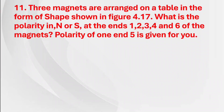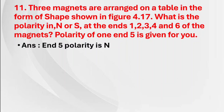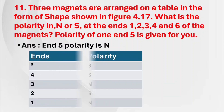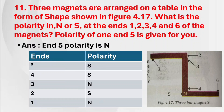Eleventh question: Three magnets are arranged on a table in the form of the shape shown in figure 4.17. What is the polarity (N or S) at ends 1, 2, 3, 4, and 6 of the magnets? Polarity of 1 and 5 is given. End 5 polarity is N (north). So end 6 will be south, end 4 will be south, end 3 will be north, end 2 will be south, and end 1 will be north.